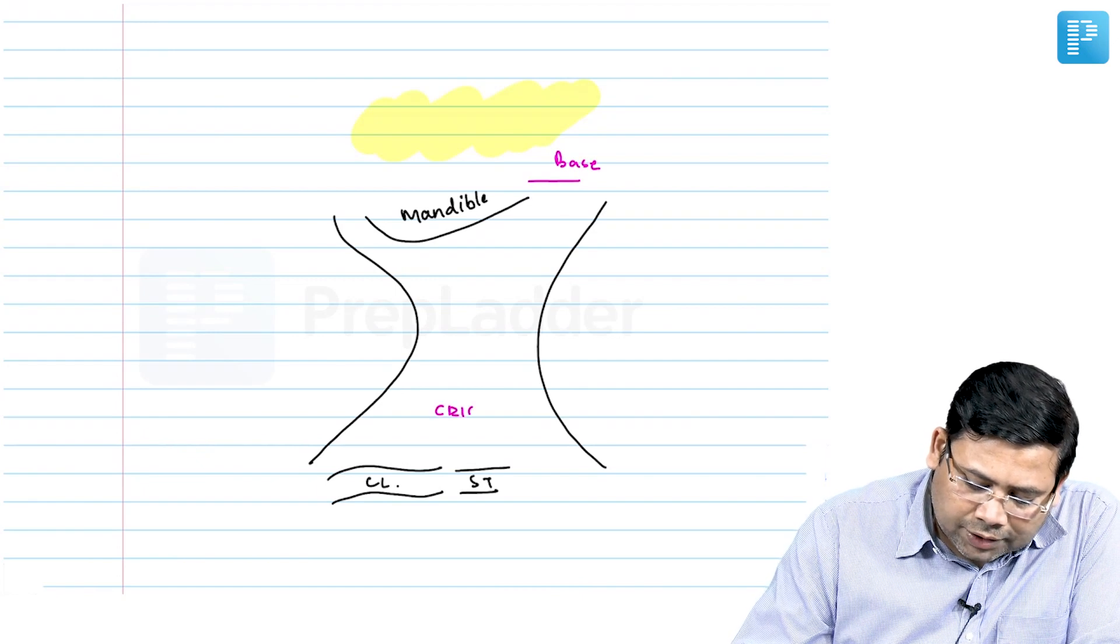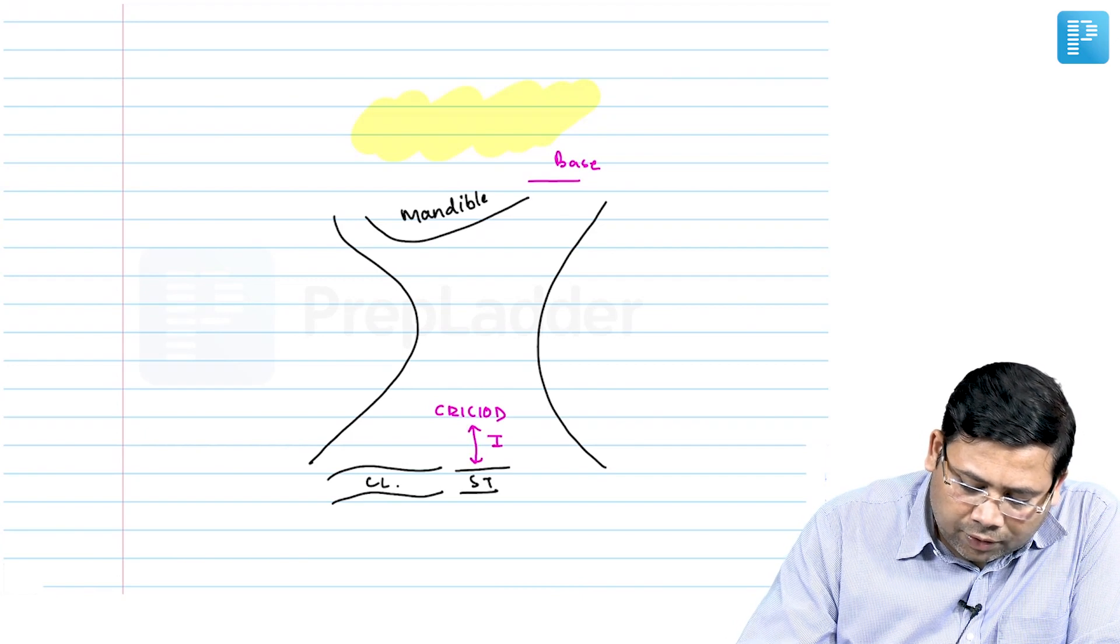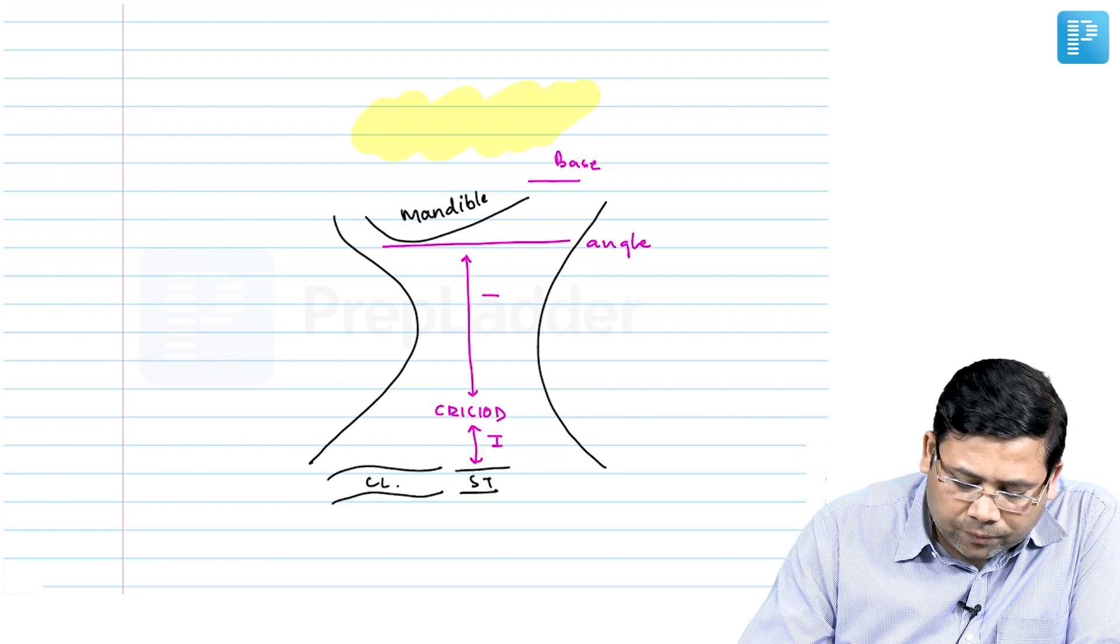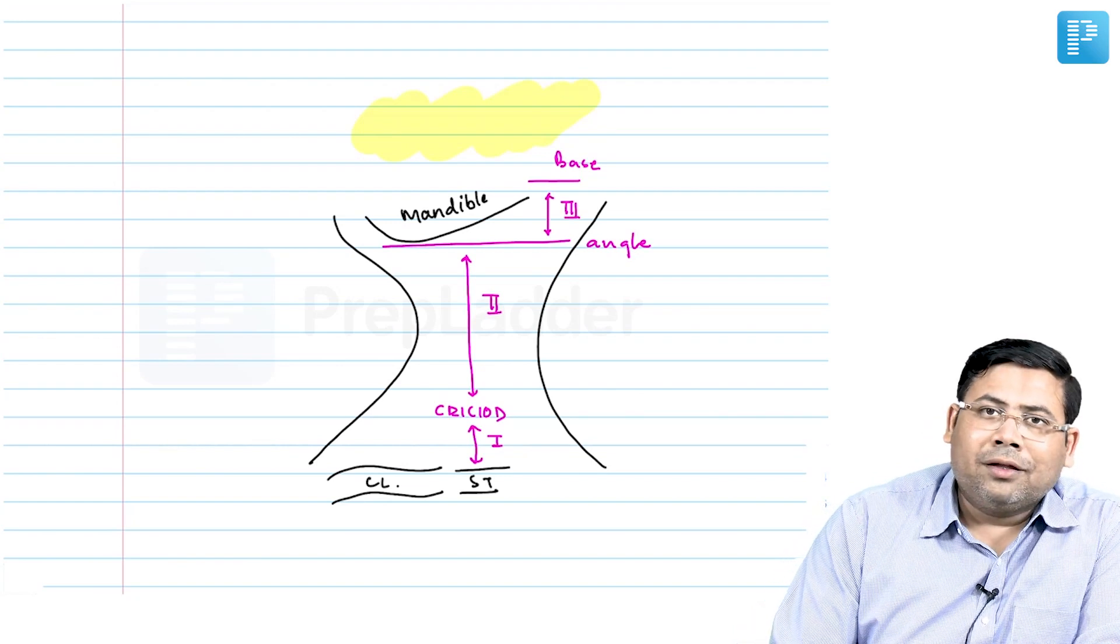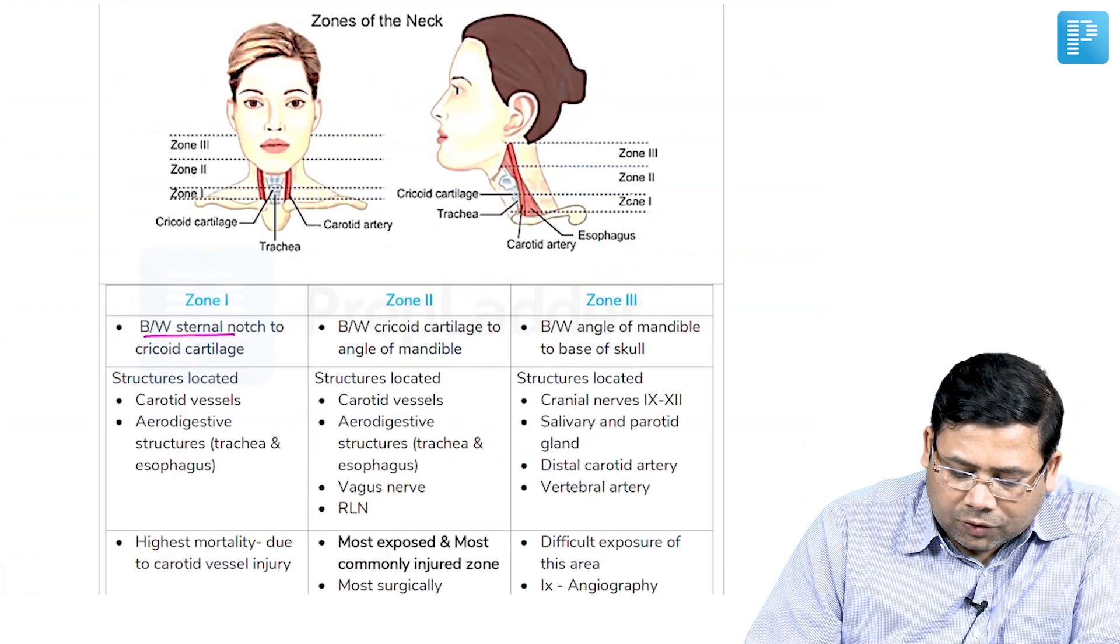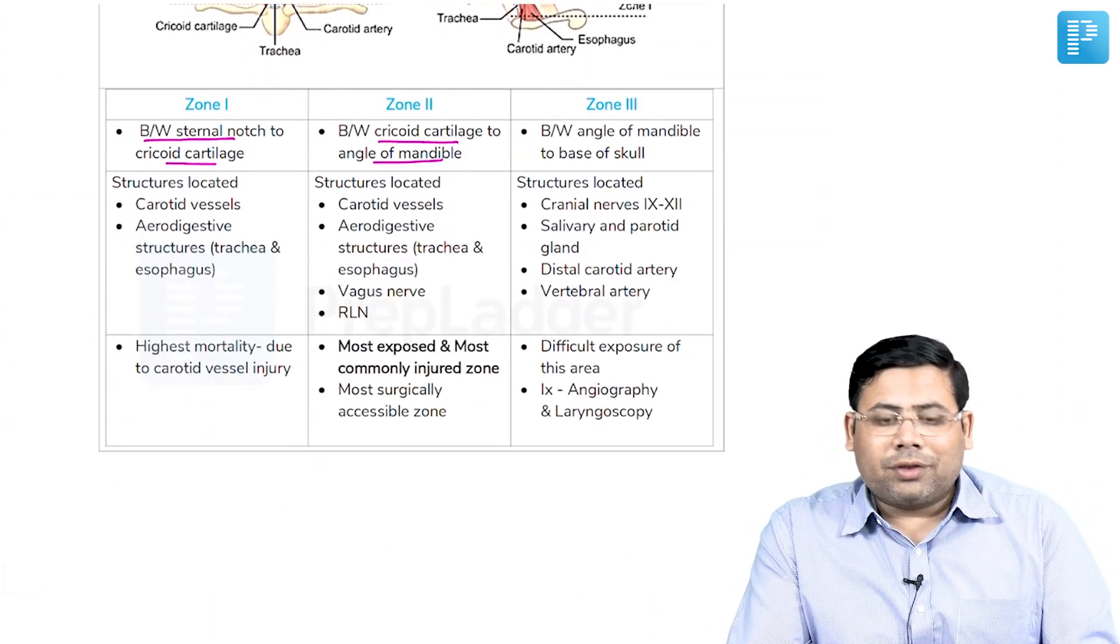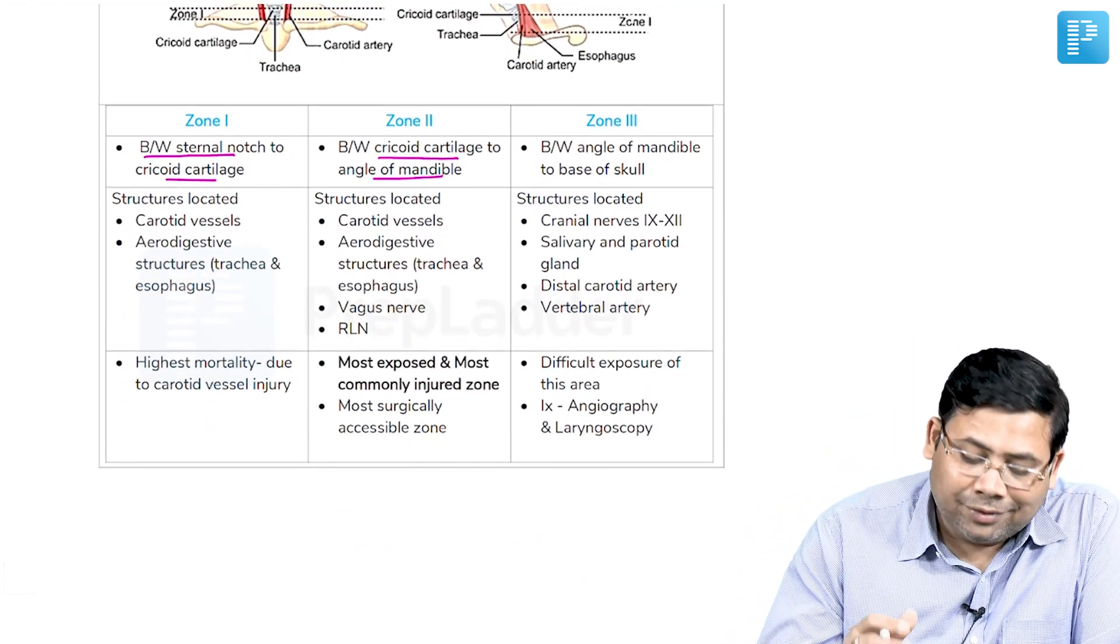So for your knowledge there is something which is known as cricoid. Between cricoid to sternum is zone 1, between this angle of mandible up to the cricoid we have zone 2, and angle to the base of the skull we have zone 3. So there are three zones in the neck. Zone 1 is sternum to cricoid and zone 2 between the cricoid to the angle of mandible. Now one very important thing that you all have to understand is what are the important structures located in these zones.